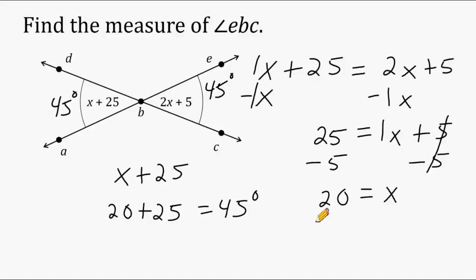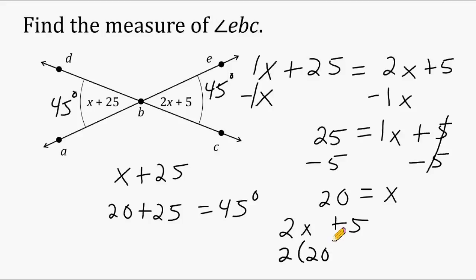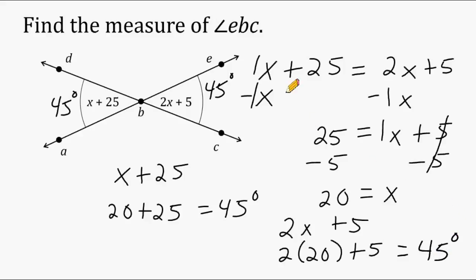We could have also come up with 45 degrees by substituting 20 into the expression 2X plus 5. So we're going to take 2X plus 5 and substitute 20 in for X, which would give us 2 times 20 plus 5. 2 times 20 is 40, and 40 plus 5 more is equal to 45 degrees. So the angle measure of EBC is in fact equal to 45 degrees.